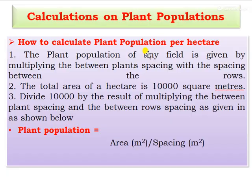You can see how to calculate the plant population. The plant population means the number of plants per unit area. To calculate plant population per hectare, we multiply the plant spacing by the row spacing. The total area of one hectare is 10,000 m². The formula is: plant population = area in m² divided by spacing in m².